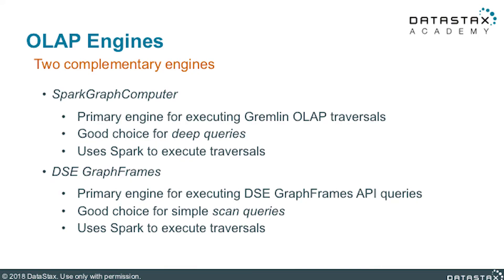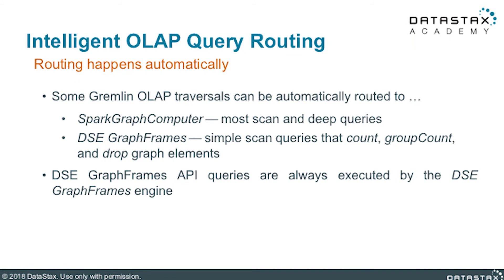We cover both Gremlin OLAP traversals and DSC Graph frames in much greater detail in separate videos. In DSC Graph there are two OLAP engines with different APIs and capabilities, both relying on Apache Spark but using different data abstractions. The Spark Graph computer engine is the primary engine for executing Gremlin OLAP traversals, great for deep queries. The DSC Graph frames engine is the primary engine for executing DSC Graph frame queries, good for scan queries. The two OLAP engines are starting to converge with Intelligent Analytics query routing: if you have a Gremlin OLAP traversal that performs a simple scan query, the Spark Graph computer engine will automatically delegate execution to the DSC Graph frames engine.